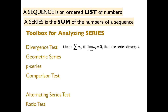Geometric series: r has to be between negative one and one. Do you remember what it sums up to? The geometric series converges when r is between negative one and one, and the sum is a over one minus r.